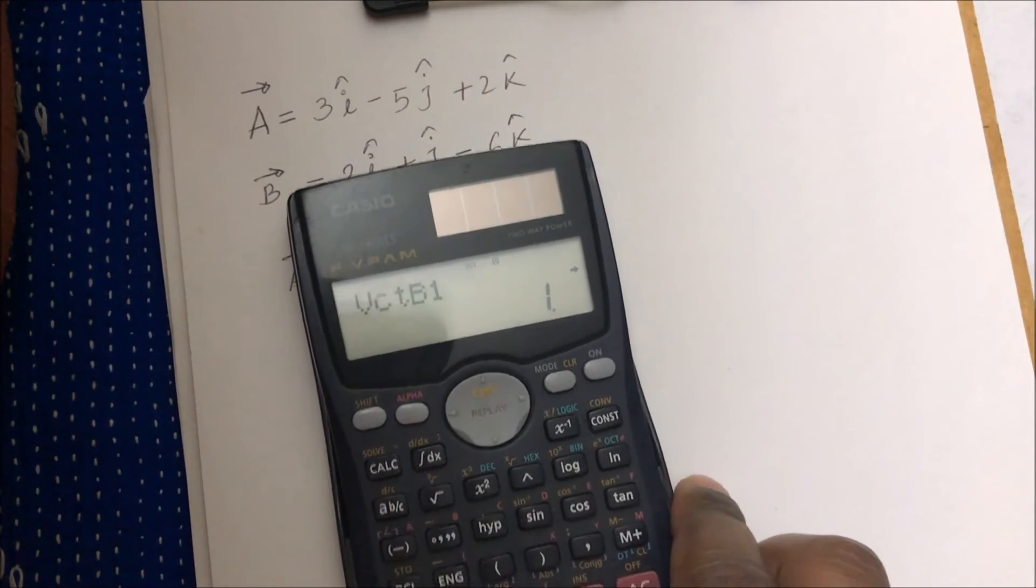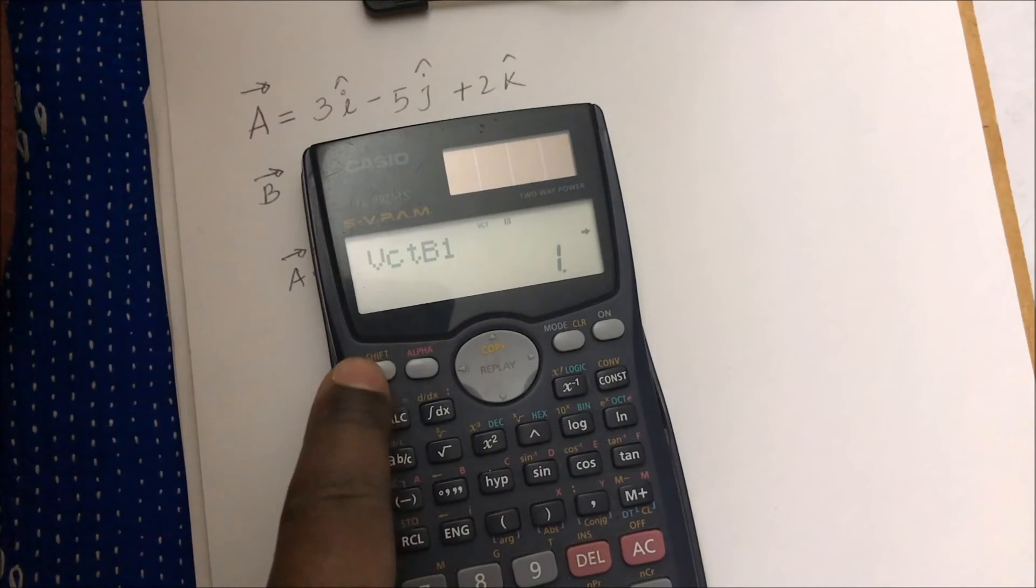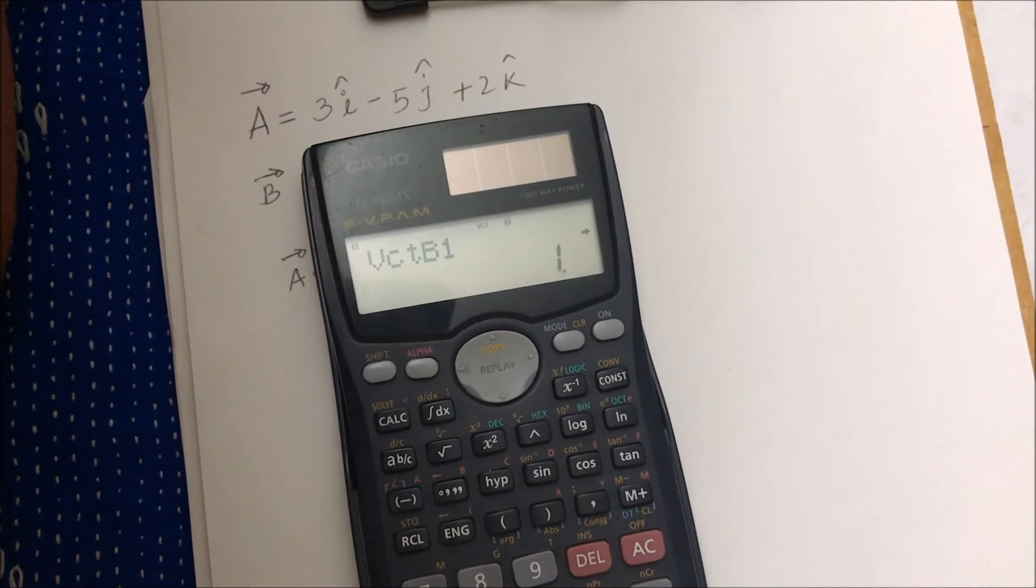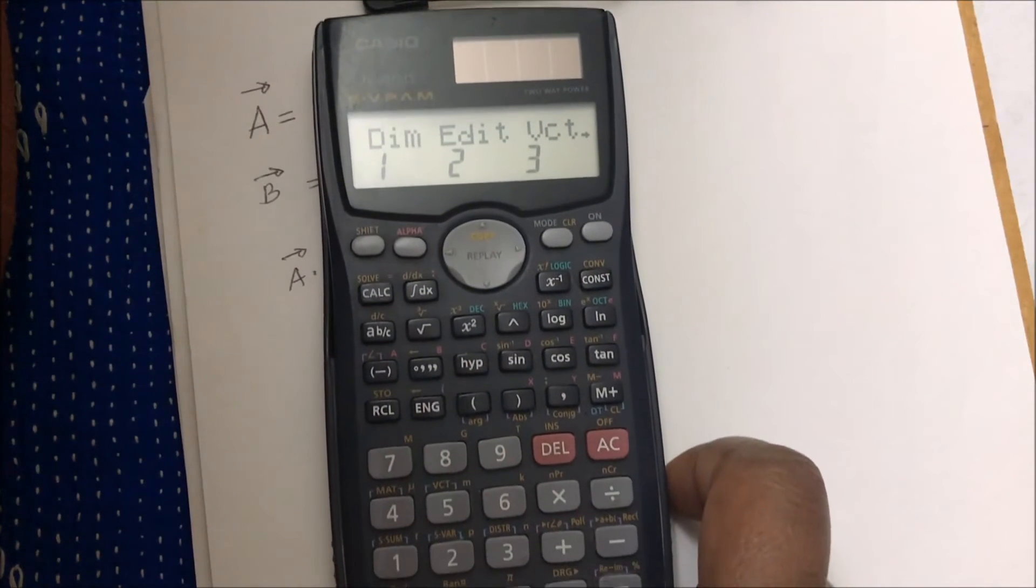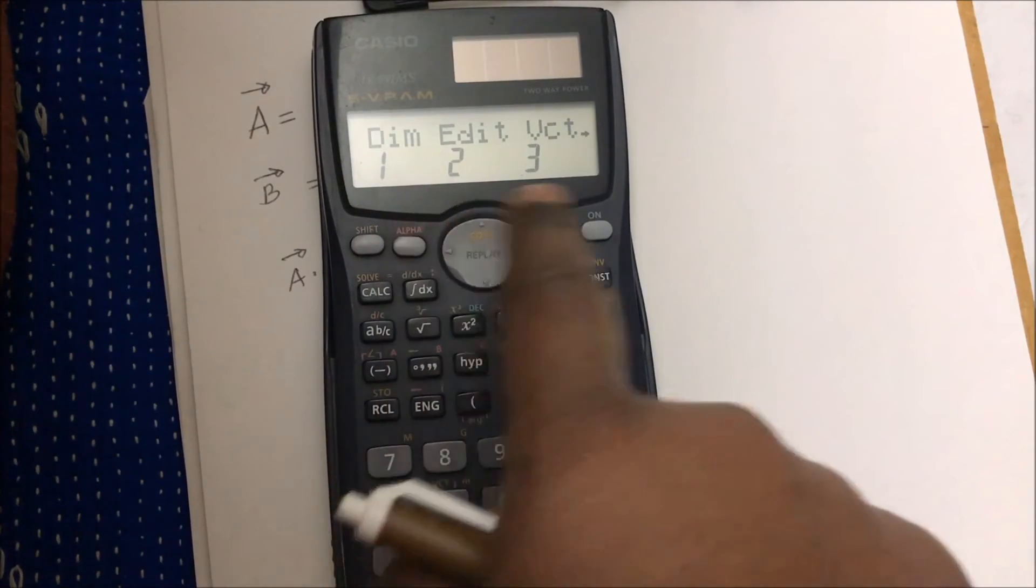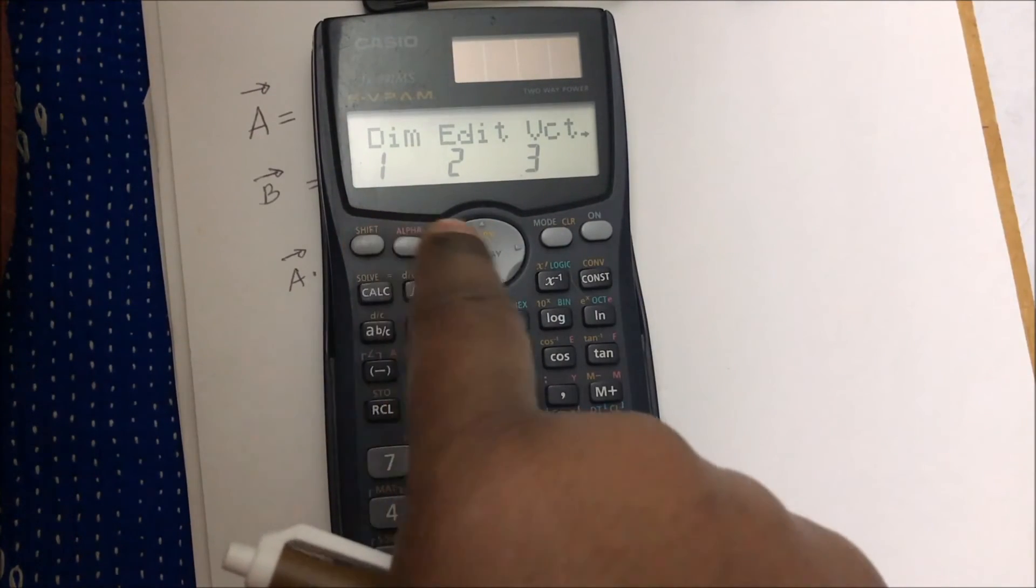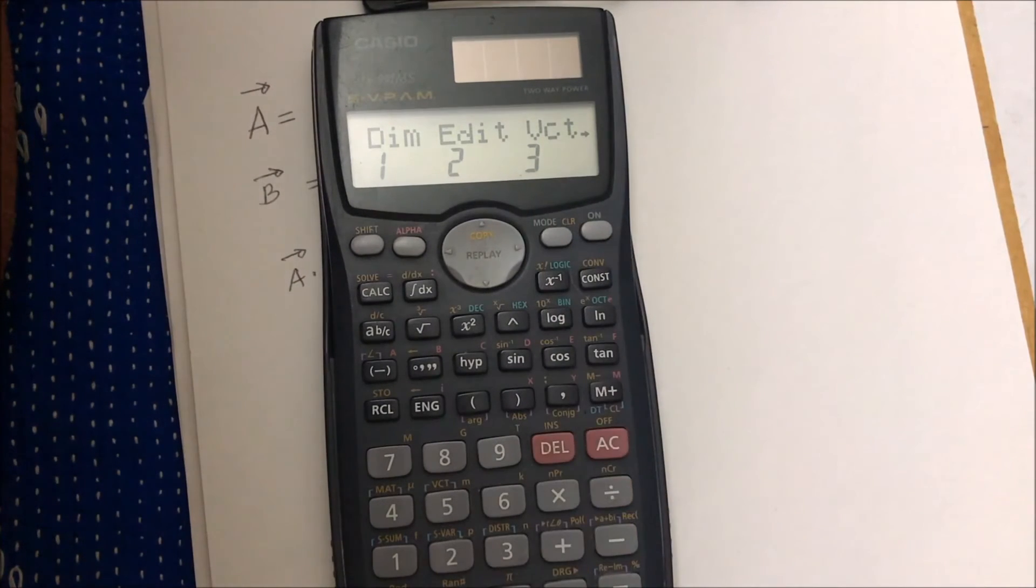So to do that, let's go ahead and do this operation. Press the shift button again, press five. Okay, so again here I have one, two, three: one is putting the dimension, two is edit - I'm not gonna edit anything - number three is our vector.